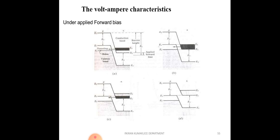In figure B, as we apply more forward bias voltage, the Fermi level continues to change. The gap between the valence band and conduction band decreases, but the Fermi level falls below the valence band in the P region, so there are no free charge carriers in that region. Therefore, current decreases in the tunnel diode when it reaches the peak level. After the peak, due to the Fermi level changes in both regions, charge carriers can no longer penetrate through the junction.